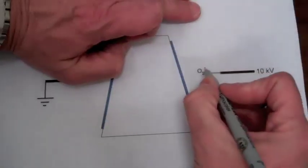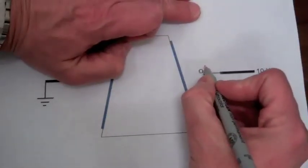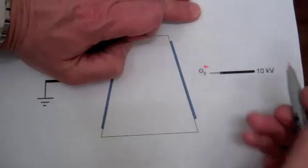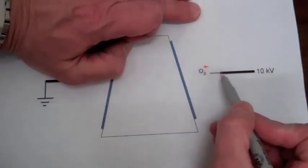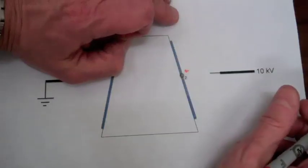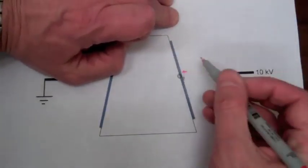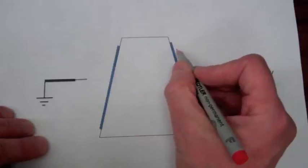So this oxygen molecule will become positively charged and it will be repelled by the positive charges on this 10 kilovolt wire. It will hit the aluminum foil on this side and charge it up positively.